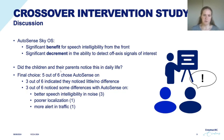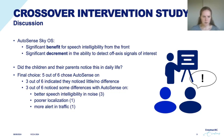Did the children and their parents notice this in daily life? For the final choice, five out of six chose the setting with AutoSense on, but three out of six indicated they noticed little or no difference. The three children and parents who did notice a difference said they had better speech intelligibility in noise. One noticed poorer localization, and one parent noticed their child was more alert in a traffic situation with AutoSense on.